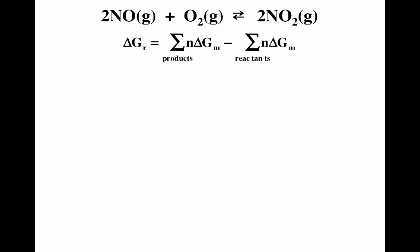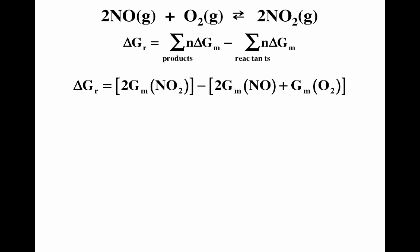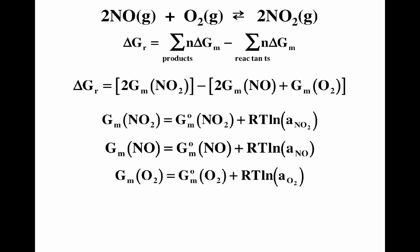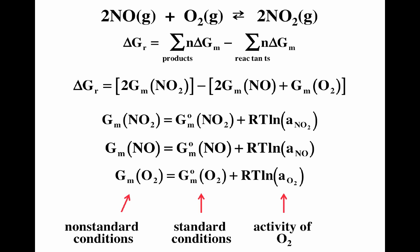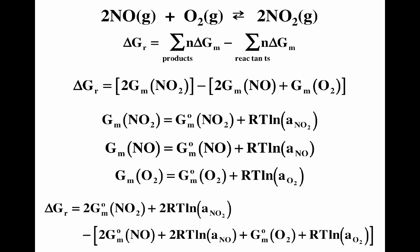We can calculate delta G non-standard by doing products minus reactants — it is a state function. We use this equation to fill in for the Gibbs free energy of NO2, NO, and O2, plugging the right-hand side values into the above equation. Remember: if there's no superscript zero, that's non-standard conditions; superscript zero is standard conditions, and we're talking about activities. Plugging those equations in, we get the change in Gibbs free energy under non-standard conditions equals 2 times the standard Gibbs free energy of NO plus 2 times RT natural log, etc.